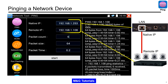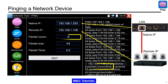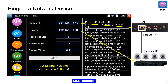The IP CCTV tester and the remote device need to be on the same network. In this example they are on 192.168.1. Packet count is the number of packets being transmitted. Packet size is the size of the packet. Packet time is the time to live.